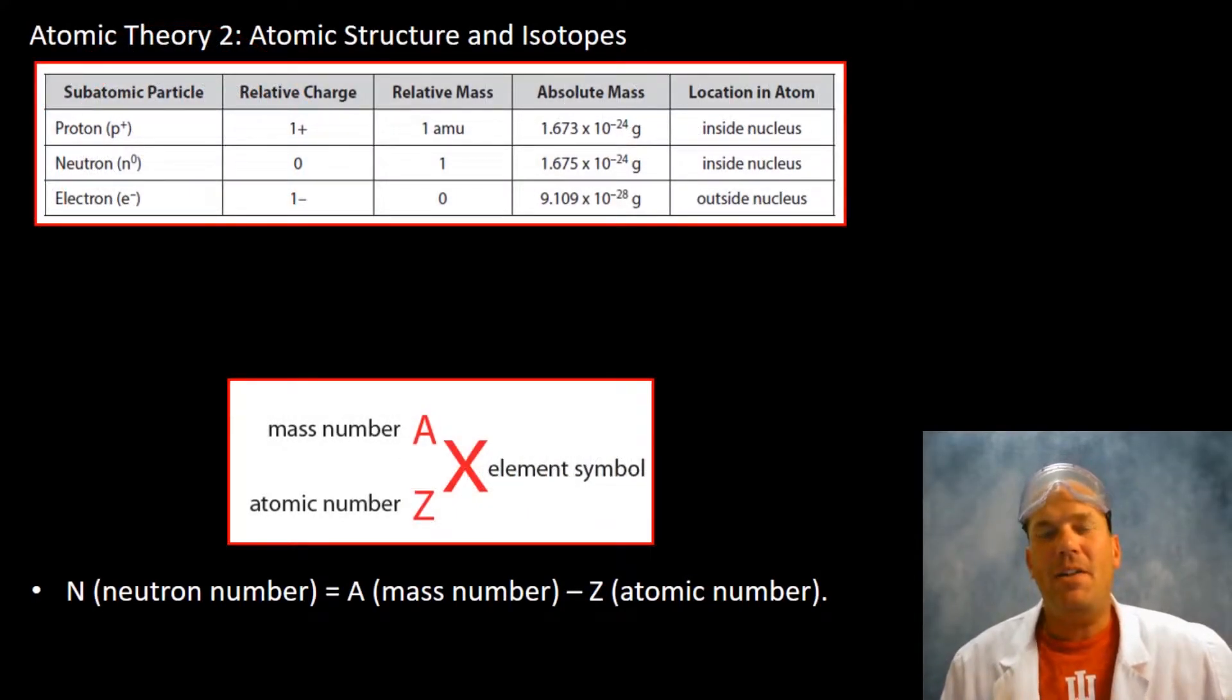I'm going to talk to you about atomic structure and isotopes. In my brief history of the atom, we left off with Rutherford and Millikan and their incredible discoveries. It wasn't until about 20 years later in the 1930s that James Chadwick was actually able to discover the neutron, the third subatomic particle.